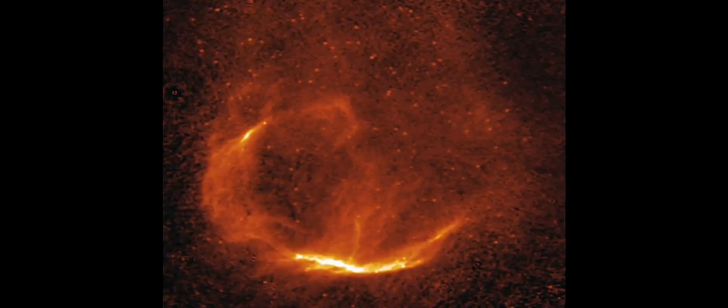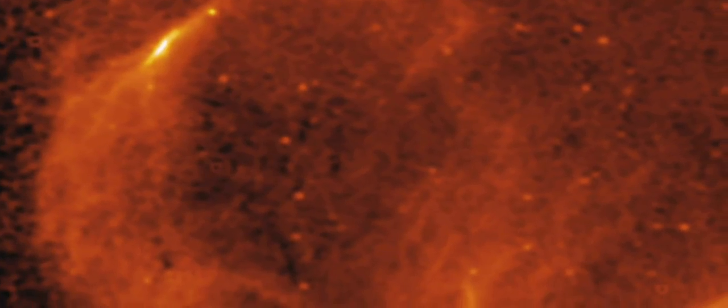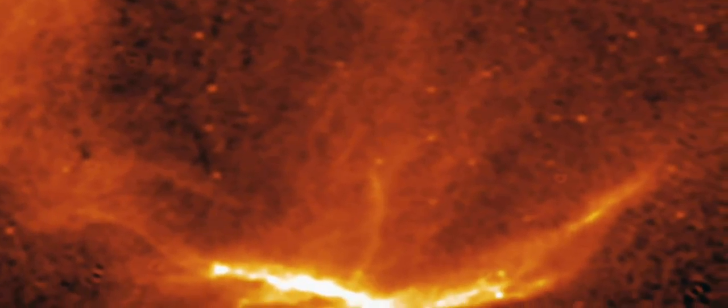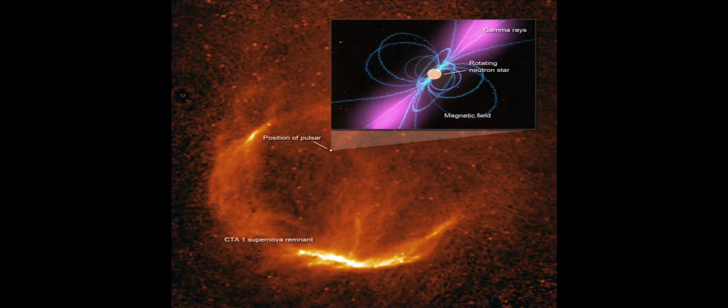In fact, Fermi has already found one. It lurks in this expanding shell of gas, shown here at radio wavelengths, formed when a star exploded about 10,000 years ago. The shell is a supernova remnant called CTA-1.